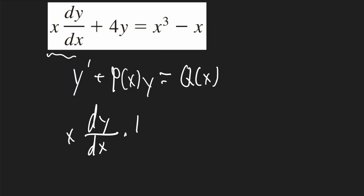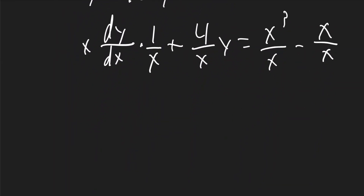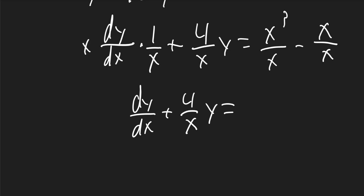We'll multiply by 1 over x, giving us dy/dx plus 4 over x times y on the left. On the right, x cubed over x minus x over x simplifies to x squared minus 1. So the equation becomes dy/dx plus 4 over x times y equals x squared minus 1.